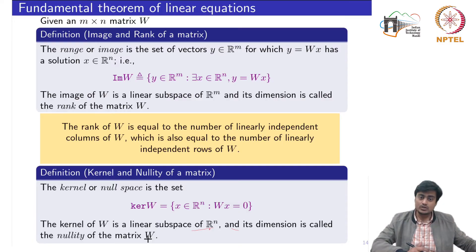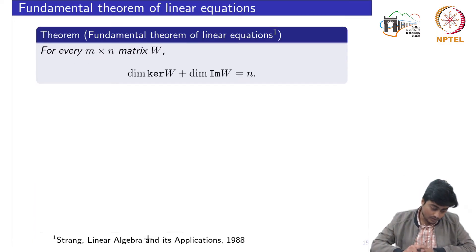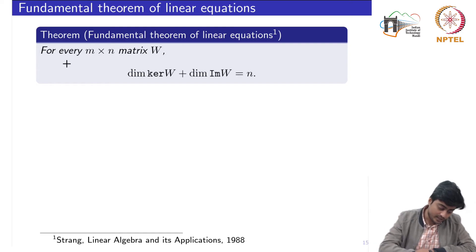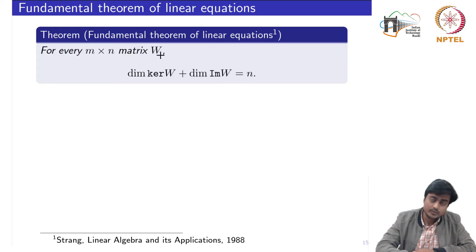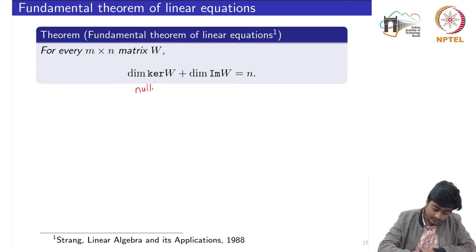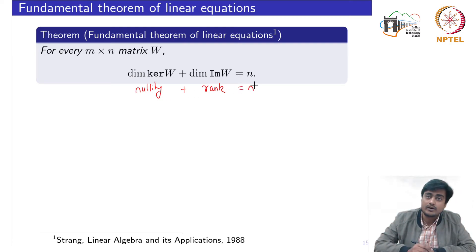After introducing these two subspaces, we can state the fundamental theorem of linear equations: for every m×n matrix W, the dimension of the kernel of W plus the dimension of the image of W equals the number of columns of W. In other words, nullity plus rank equals the number of columns of matrix W.